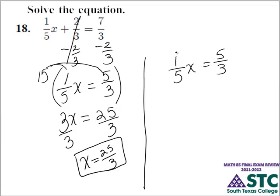We multiply by the reciprocal of 1/5 on both sides. The reciprocal of 1/5 is 5 over 1. What you do to one side, you must do to the other.